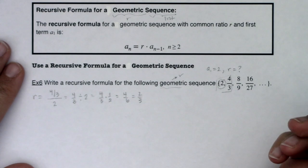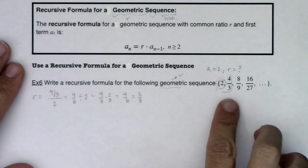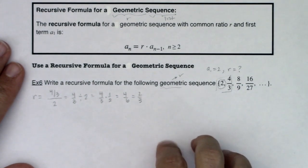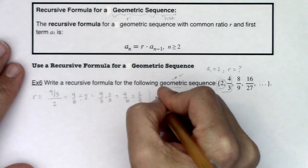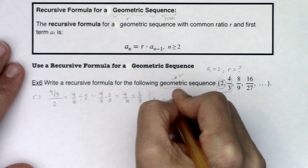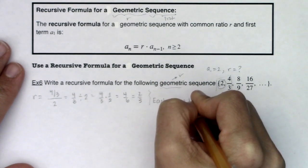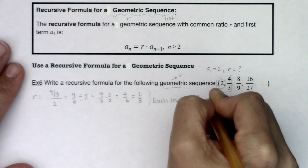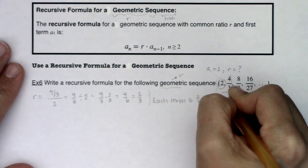So I know that took me a little while, but each term is 2 thirds of the previous term. So let me go ahead and say that each term is 2 thirds of the previous term.